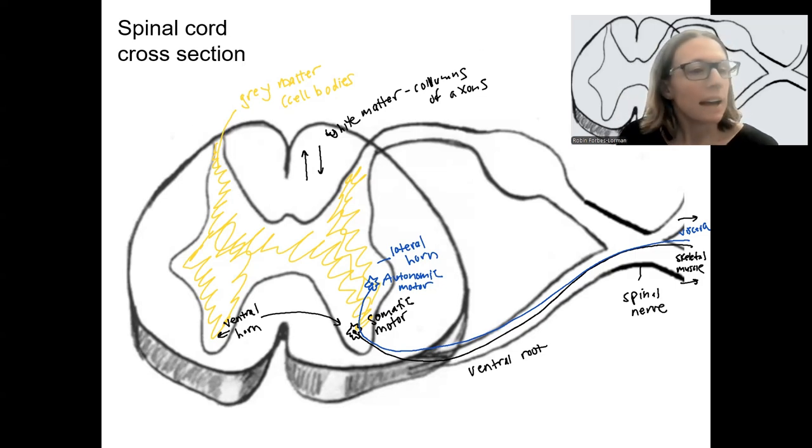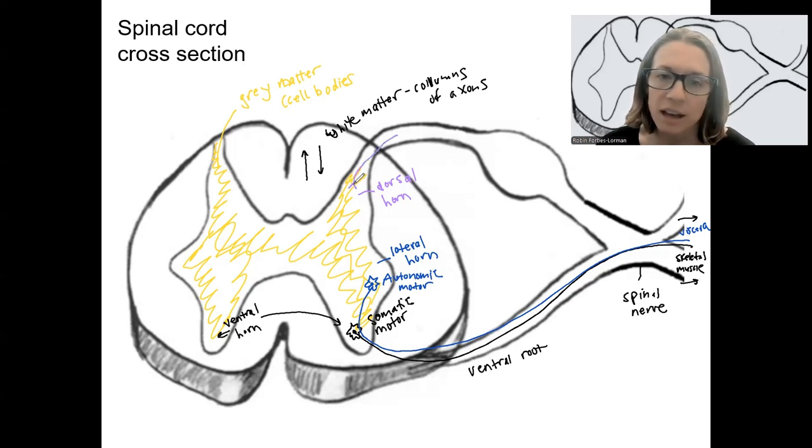The last region of the gray matter is in back. So what might that be called? The dorsal or posterior horn. And this is going to process sensory information. So information comes in here. I'm going to draw. That's the axon terminal. Here's the axon. Where's my cell body? It's going to be right in here.